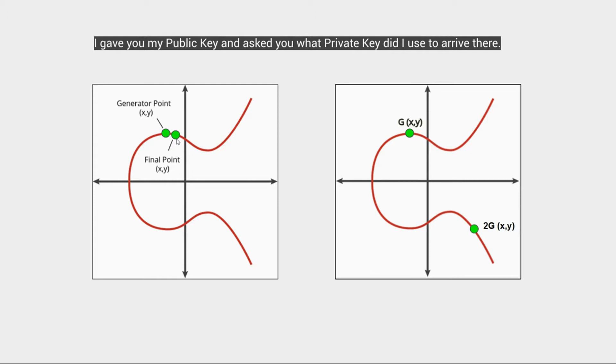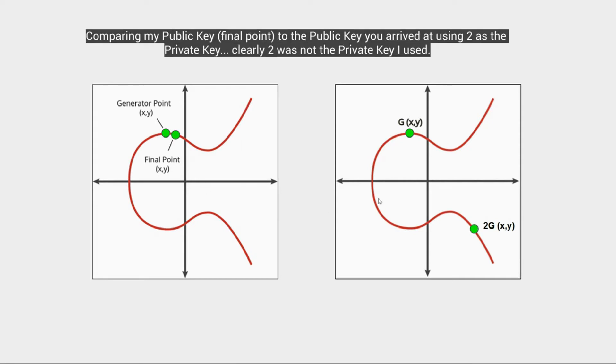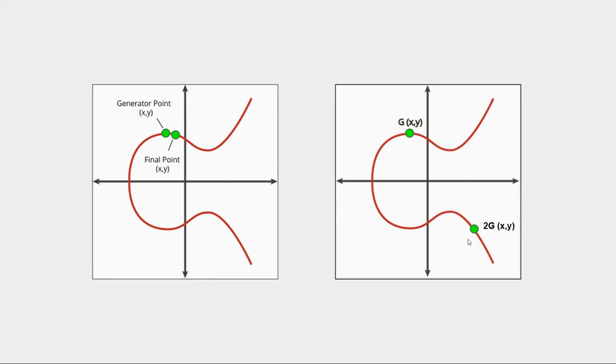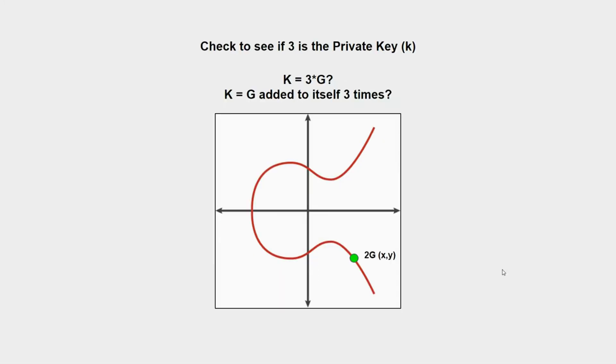I told you that this is my public key and I asked you what private key did I use to get there. Now, if you used 2 as the private key, you get this point, right? So this is your public key. You could easily compare and say, well, clearly 2 is not the correct answer because this is not the final point that you are looking for. So now what?